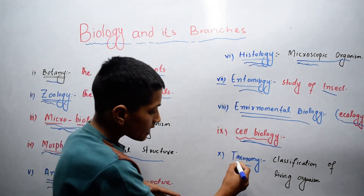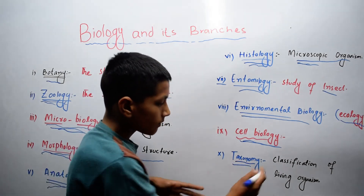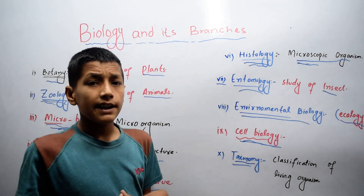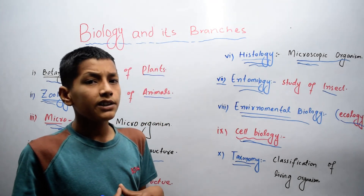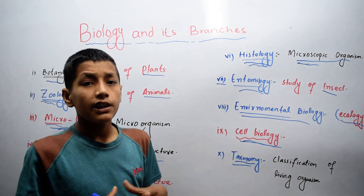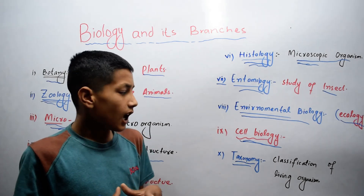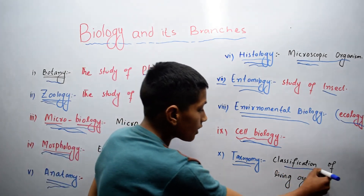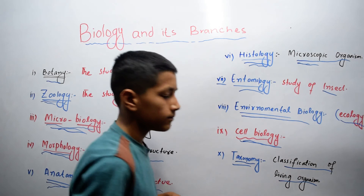Let's come to the final branch, which is taxonomy. Taxonomy is the branch of biology in which we deal with the study of classification of living organisms.